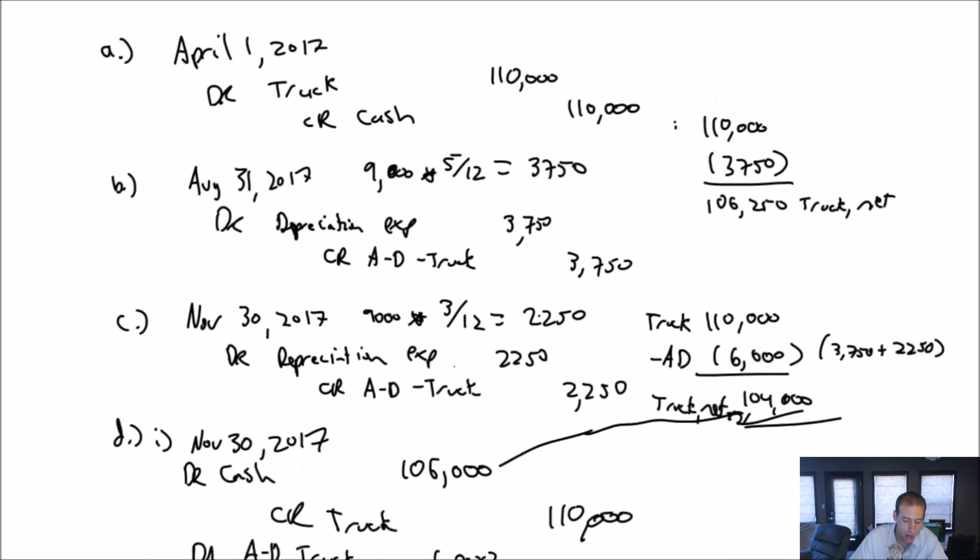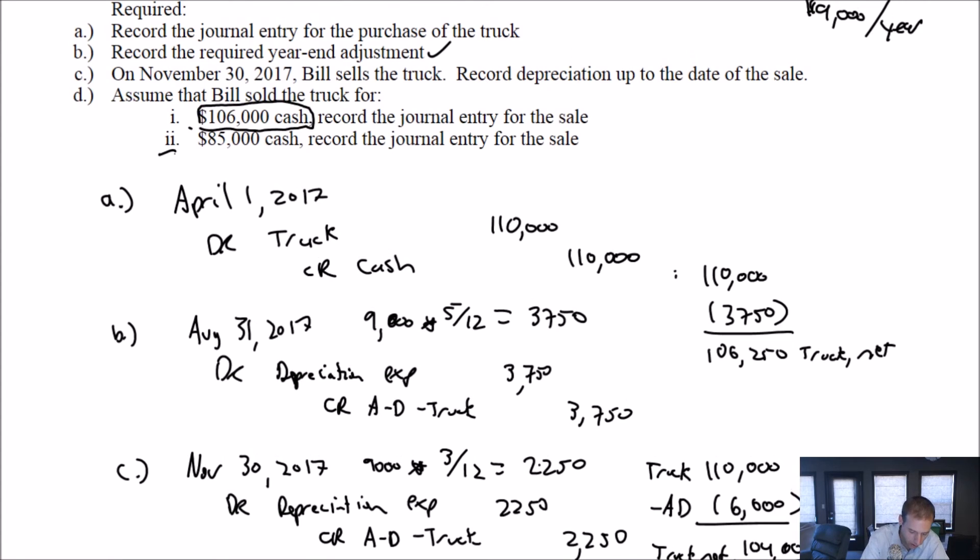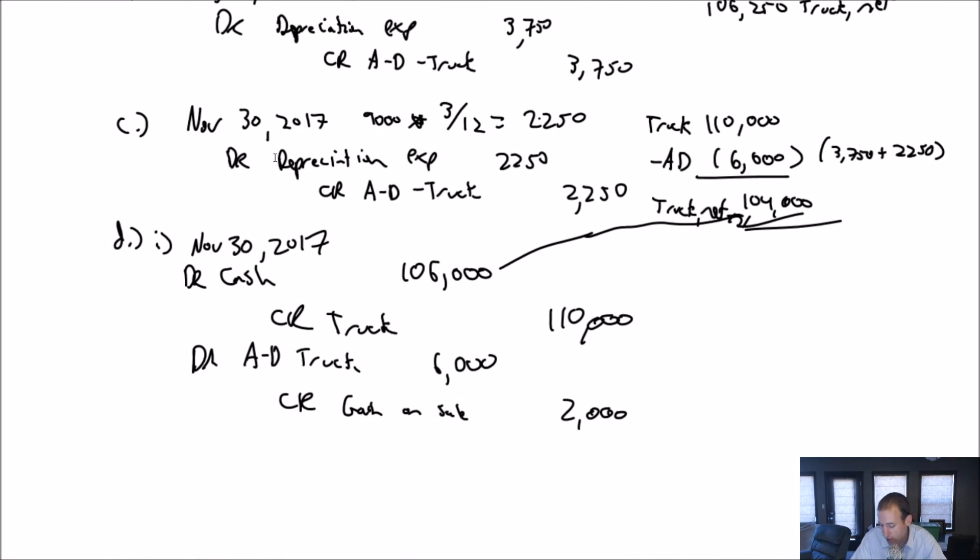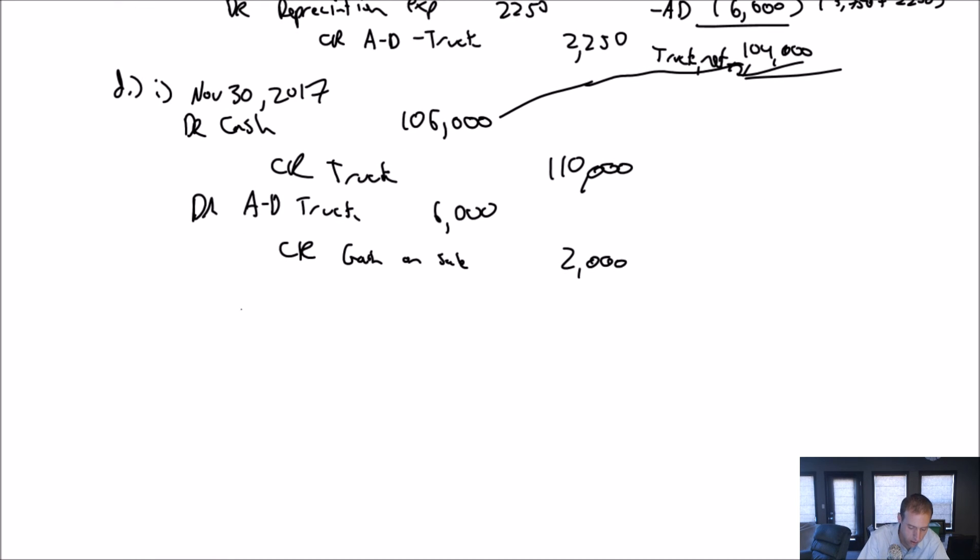Let's look at part II of the question. We get paid just $85,000. So we have the same truck worth $104,000. But rather than getting $106,000 for the $104,000 asset, we only get $85,000. I think you can all project this is going to be a loss situation. We got paid less than what the truck was worth on our books.